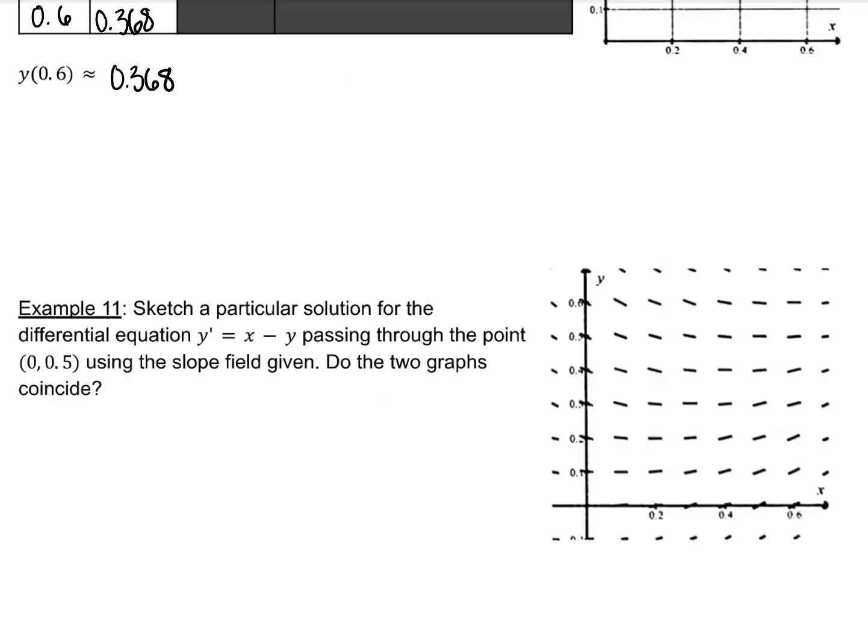Here we have a slope field already drawn for the previous differential equation. So now graph the particular solution that passes through the point (0, 0.5) and see if it looks like the graph we have above.